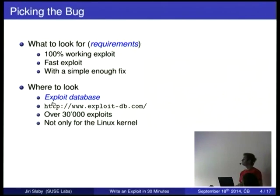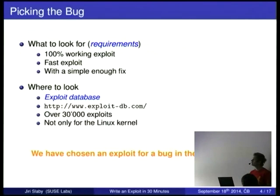Where to find such a bug? There exists an exploit database at that URL and there is over 30,000 exploits in there. Not all of them are for the Linux kernel but we were able to find one which meets the requirements we had. The one we chose was in the netlink code.